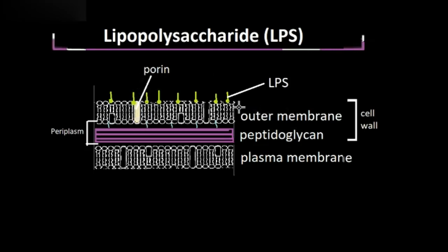And LPS, which is the subject of this video, is what we're going to be talking more about. The space between the outer membrane and the plasma membrane is known as the periplasm, and this is where we find the thin layer of peptidoglycan.